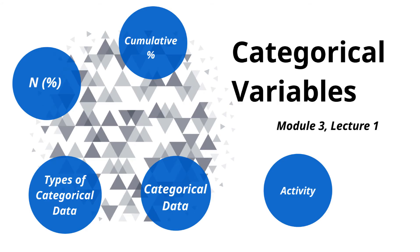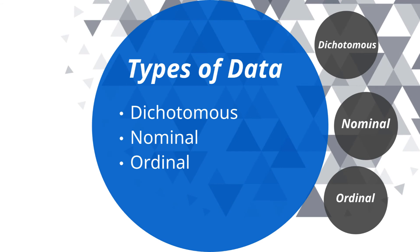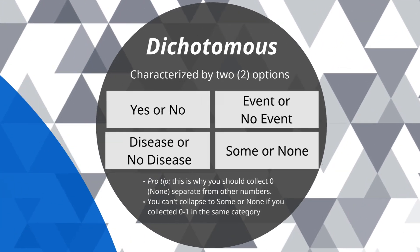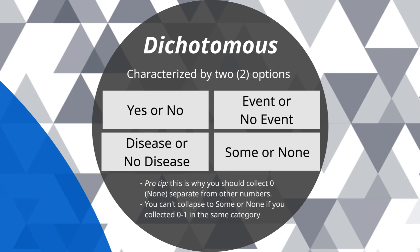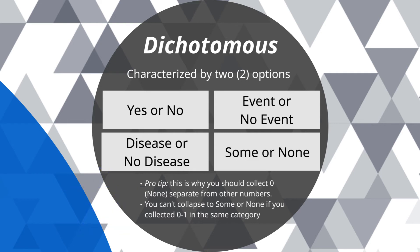So we've seen examples of mutually exclusive and exhaustive categorical data. What specific types of categorical data are there? Categorical data falls into three main types: dichotomous, nominal, and ordinal. Dichotomous variables are characterized by two options — stemming from the word 'di,' meaning two. Common options include yes or no, event or no event, disease or no disease, some or none. This is why you should always collect zero or none separate from other levels, so you can later collapse categories to compare no pain versus any pain. Dichotomous is the simplest categorical data type — just two mutually exclusive and exhaustive responses.